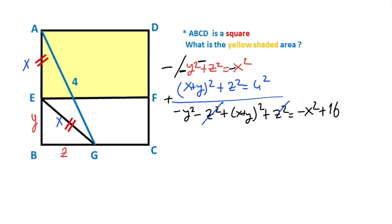These cancel. That means minus Y squared plus this expression equals X squared plus 2XY plus Y squared, which equals minus X squared plus 16.